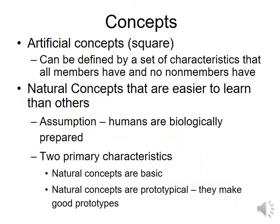With concepts, we have artificial and natural concepts. An artificial concept is defined by a set of characteristics that all members must have and no non-members can have. The best example is a square: to be a square, you need four equal sides and four right angles — there are no other qualifiers. That's also behind the saying that all squares are rectangles, but no rectangles are squares.